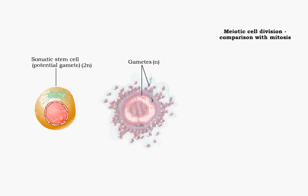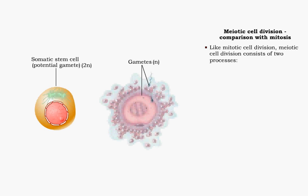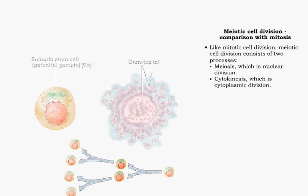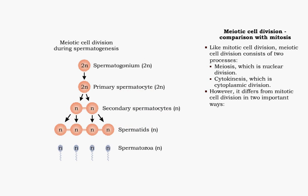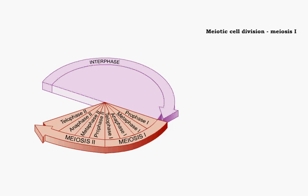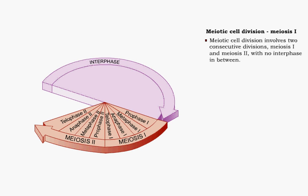Like mitotic cell division, meiotic cell division consists of two processes: meiosis, which is nuclear division, and cytokinesis, which is cytoplasmic division. However, it differs from mitotic cell division in two important ways. First, it consists of two divisions, thereby producing four cells. And second, the daughter cells are haploid and genetically unlike each other. Meiotic cell division involves two consecutive divisions, meiosis I and meiosis II, with no interphase in between.